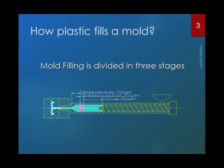As soon as the polymer melt comes in contact with the relatively cold walls of the mold, the melt starts shrinking. We need to compensate for this volumetric shrinkage, so we continue to apply pressure until it freezes. This phase is called the compensation phase.